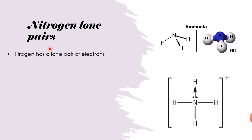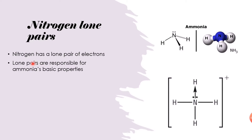Nitrogen has a lone pair of electrons. In ammonia, nitrogen is bonded to three hydrogens and has a lone pair because nitrogen has five electrons on its outer shell. This lone pair is responsible for ammonia's basic properties — it allows ammonia to be a base because it acts as an electron donator, a proton acceptor, and releases hydroxyl ions in solution.